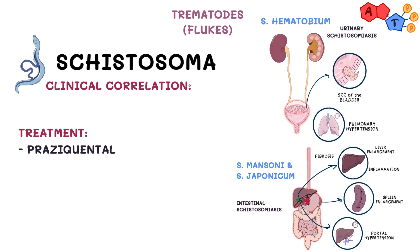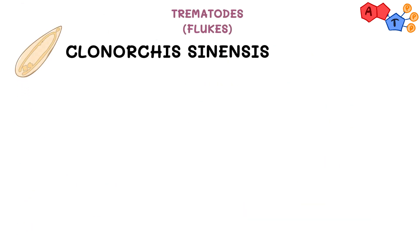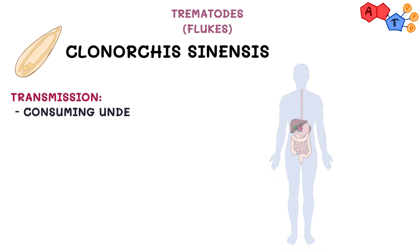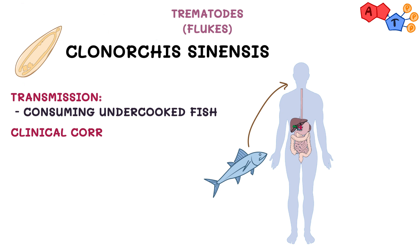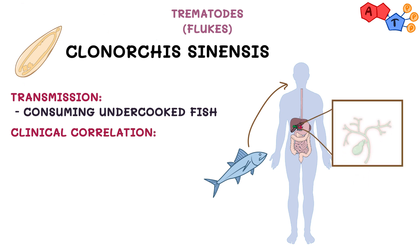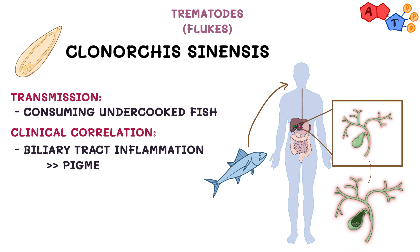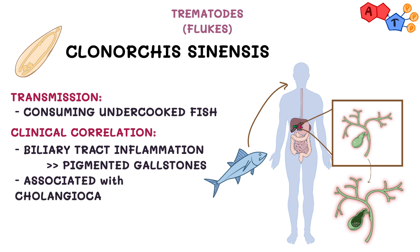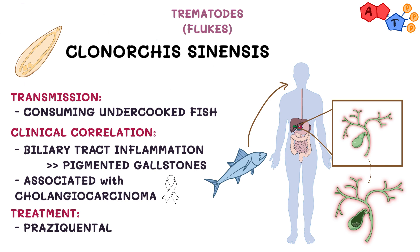The last worm we're going to talk about today is Clonorchus sinensis. It's transmitted by consuming undercooked fish, and once this happens it can lead to biliary tract inflammation and consequently pigmented gallstones. It's also associated with cholangiocarcinoma, or cancer of the biliary tract. For treatment, we use praziquantel.